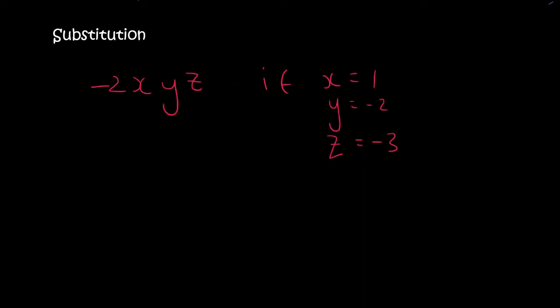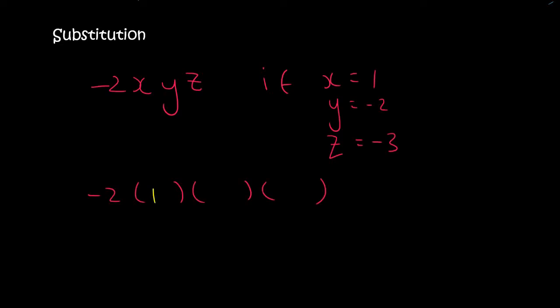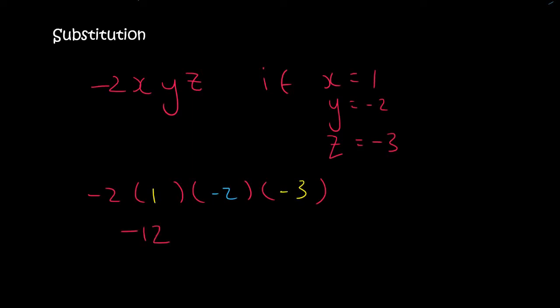Here's another one. So now we've got x, y, and z. You open up a bracket for each letter. x is 1, so I just fill that in there. y is minus 2, and z is minus 3. You can simply type this in on the calculator, and it's just going to give you negative 12.